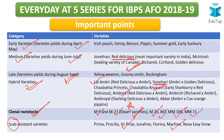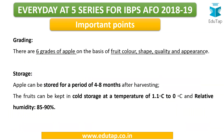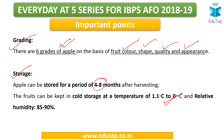Coming to grading: there are six grades of apple, based on fruit color, shape, quality, and appearance. Regarding storage: after harvest, apple can be stored for four to eight months. It is kept in cold storage at a temperature of 1.1 to 0 degrees Celsius, with relative humidity of 85 to 90 percent.